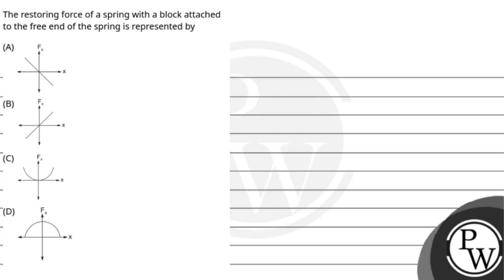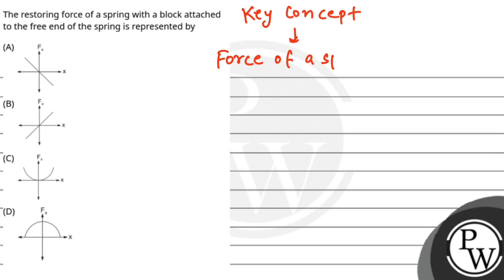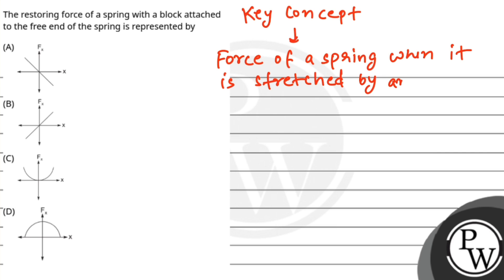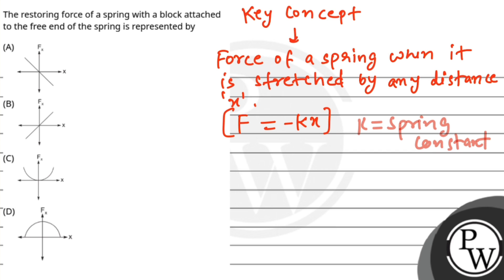Let's see the key concept involved. The key concept in this question is the force of a spring when it is stretched by any distance x. This force comes out to be minus kx, where k is the spring constant and x is the distance by which the spring is stretched.